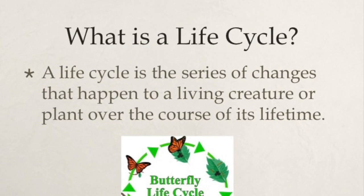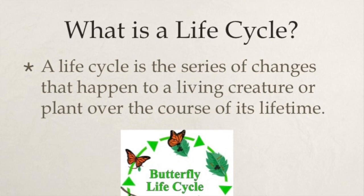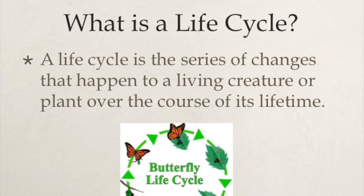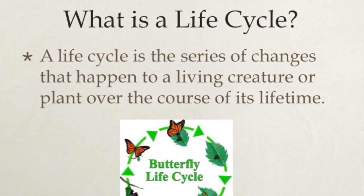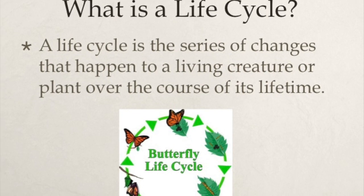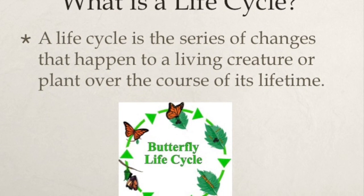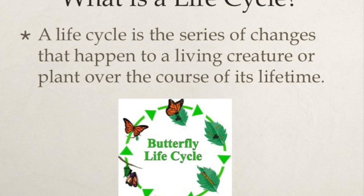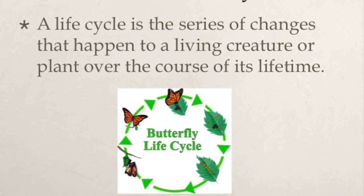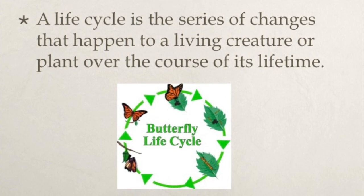What is a life cycle? A life cycle is the series of changes that happen to any living creature or a plant over the course of its lifetime. We can learn the life cycle of a butterfly, the frog, and we can even take a look at the life cycle of humans.